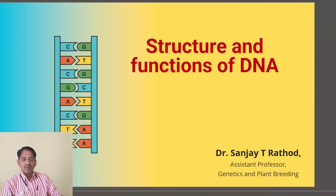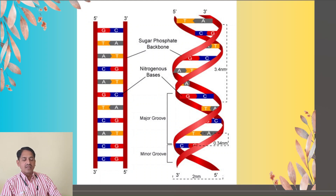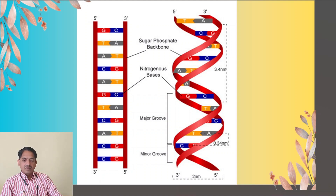Let's talk about the double helix, that is DNA — or in simple words, you can call it deoxyribonucleic acid — which carries the genetic information essential for the growth, development, functioning, and reproduction of all living organisms. You can think of it as the ultimate instructions for the development of characters, as we discussed earlier.